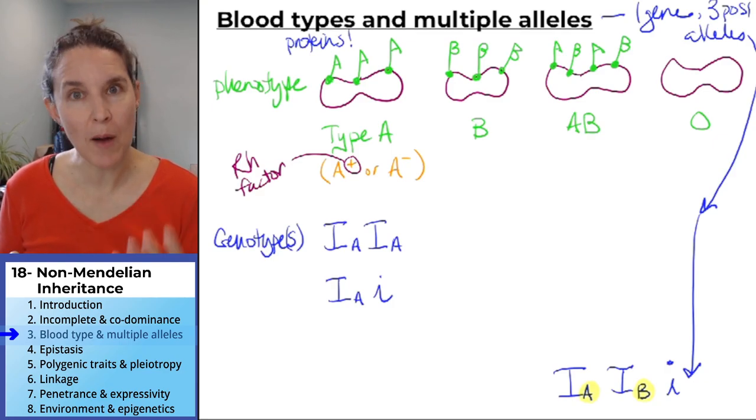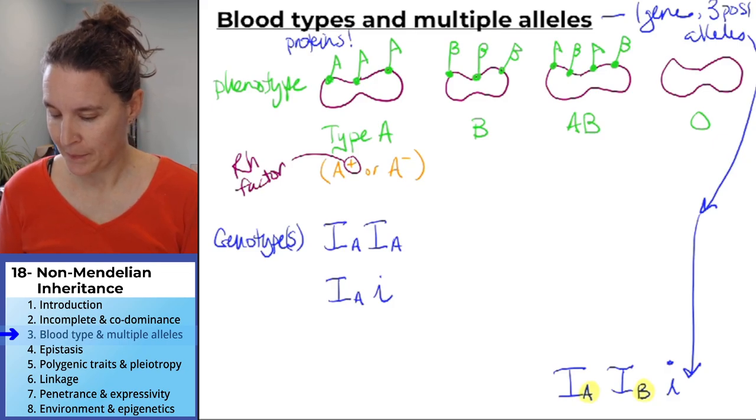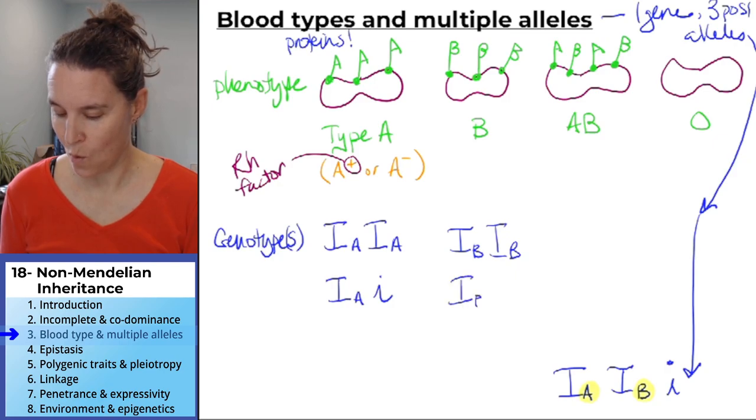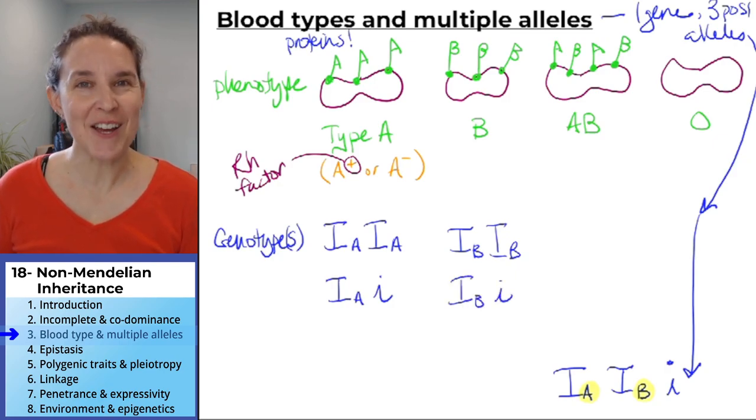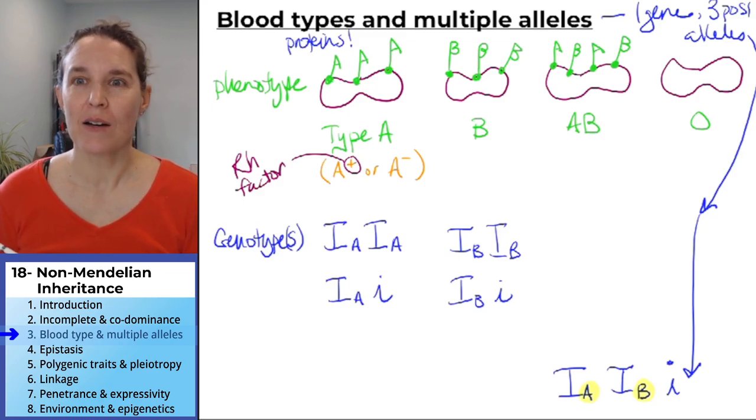Okay. What about B? What are our possible genotypes that lead to type B blood? Uh-huh. I know that you knew that. Or I know you knew that too. Good job.